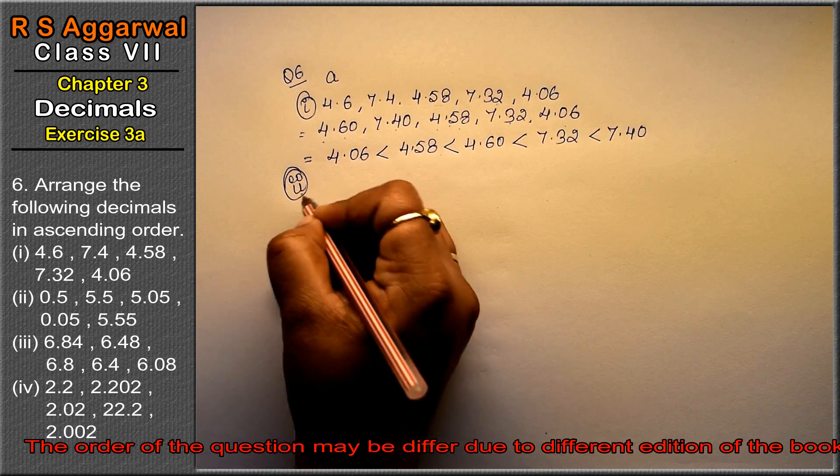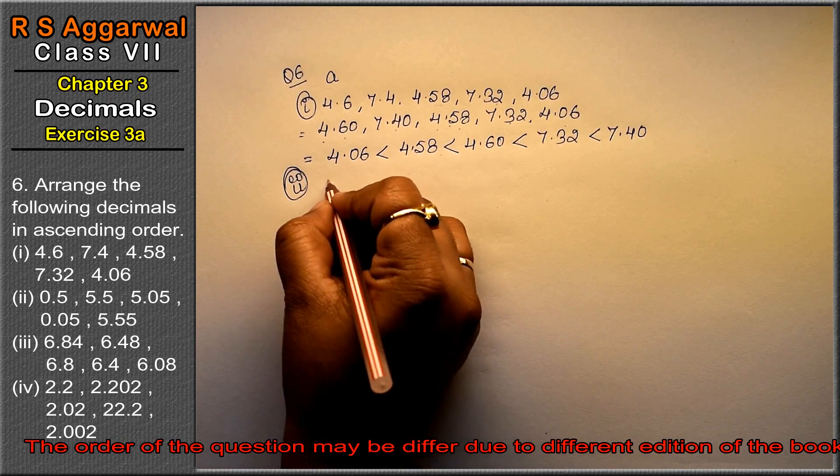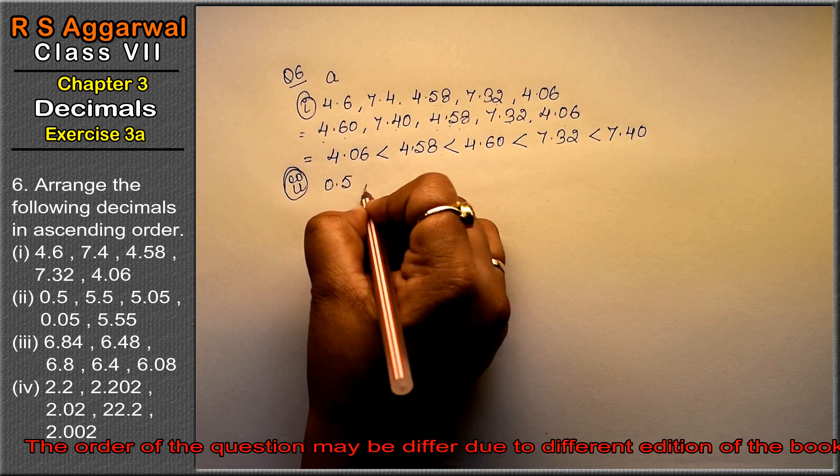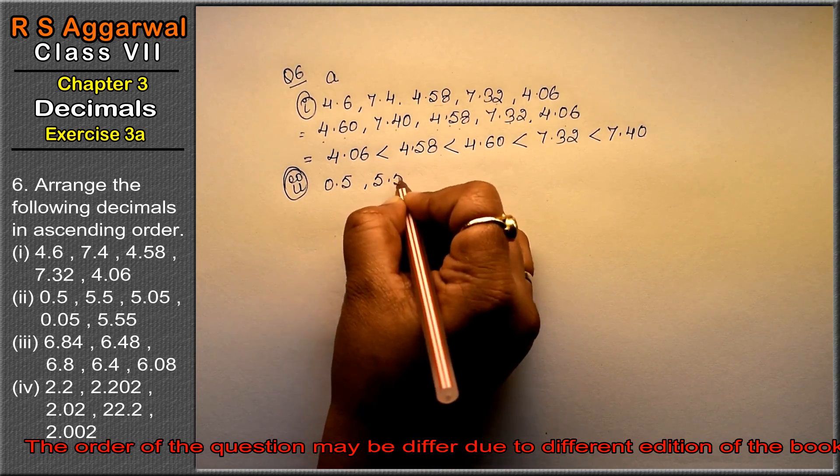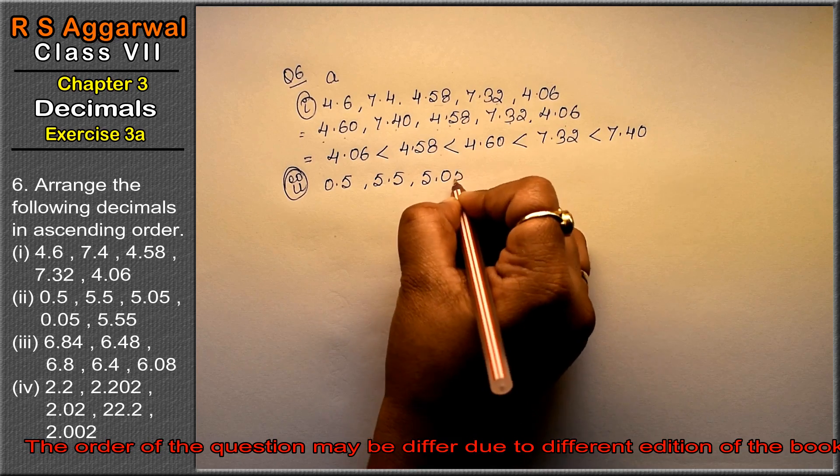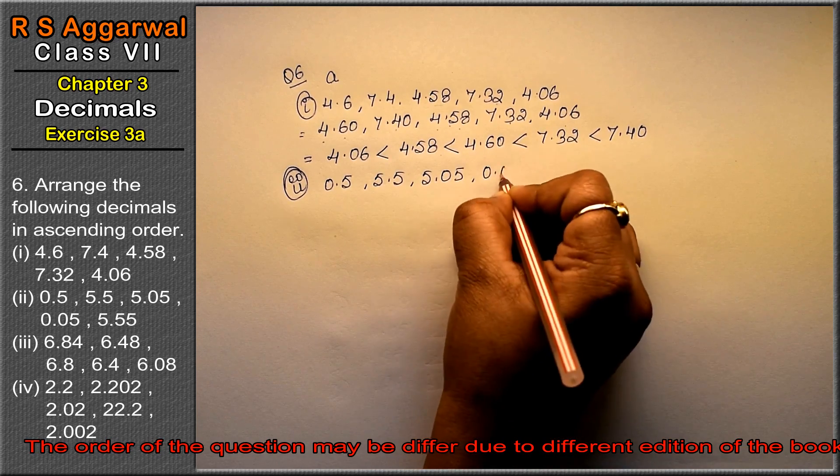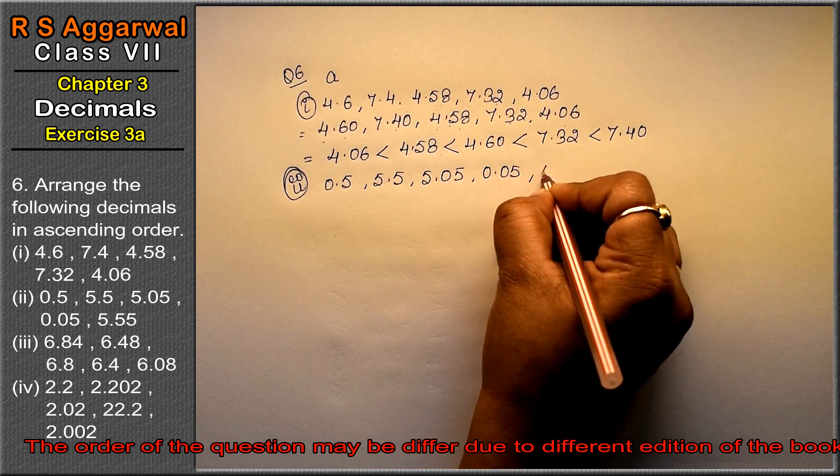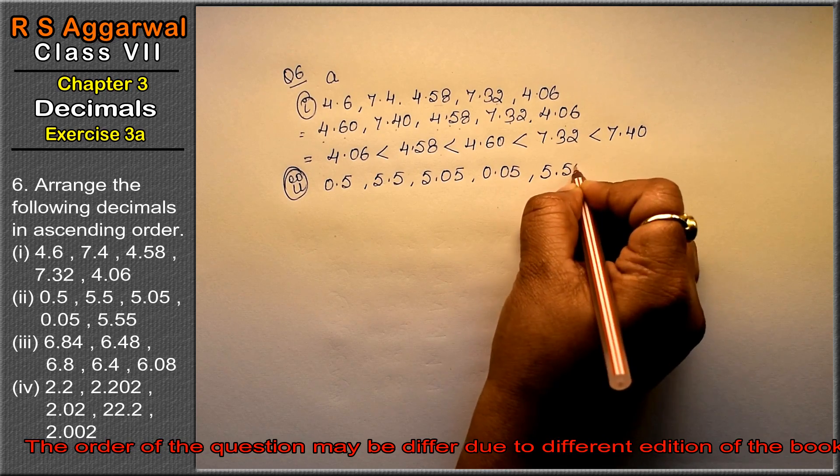Let's do second part. Second part is 0.5, 5.5, 5.05, 0.05, and 5.55.